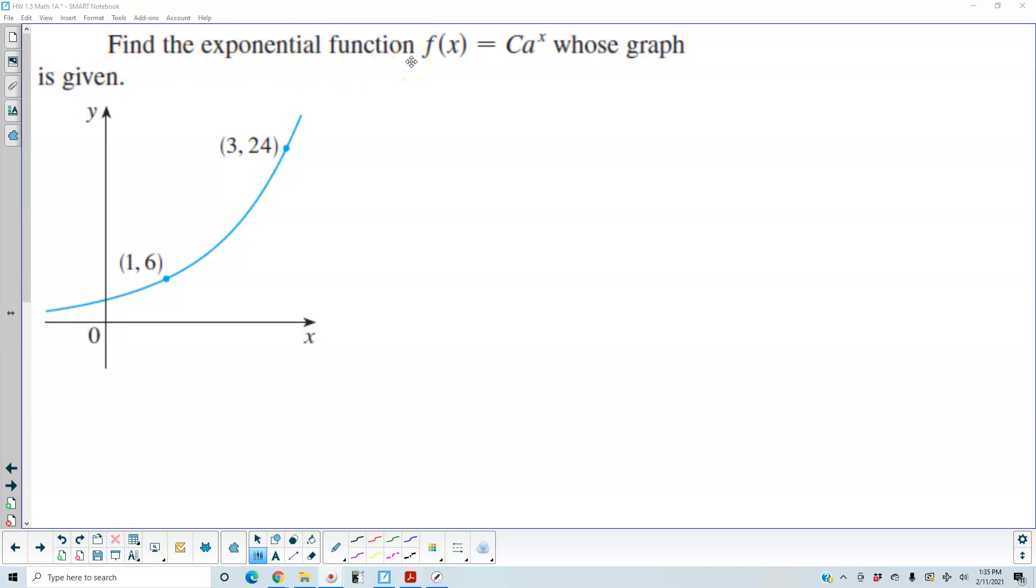Find the exponential function f of x, which is equal to c a to the x whose graph is given. So here is the exponential graph. We have two ordered pairs that are given.